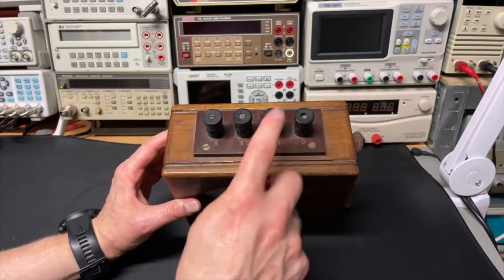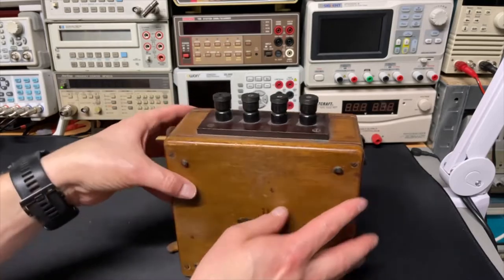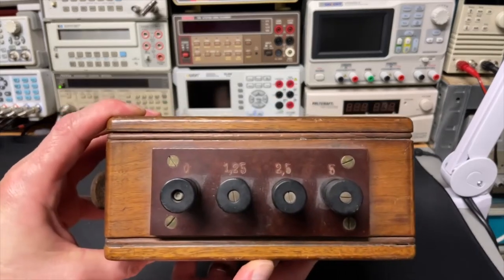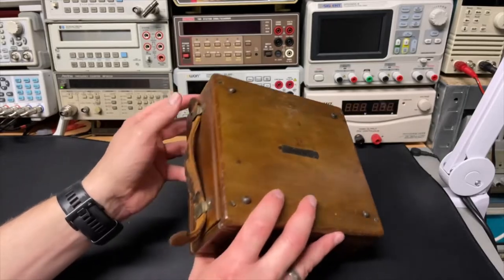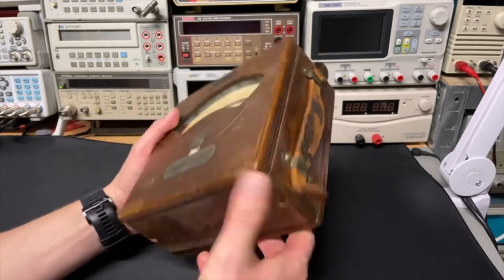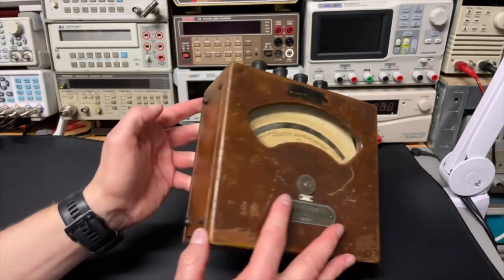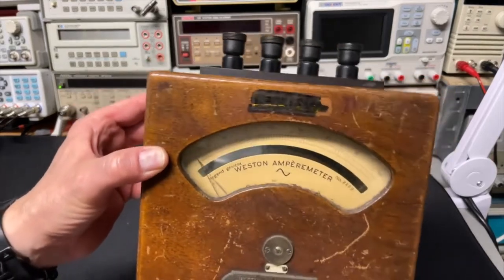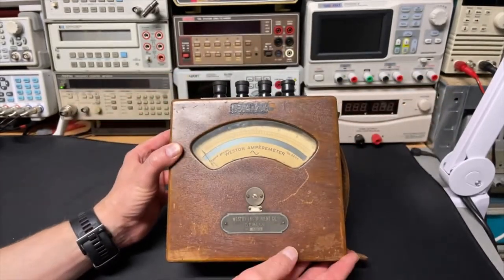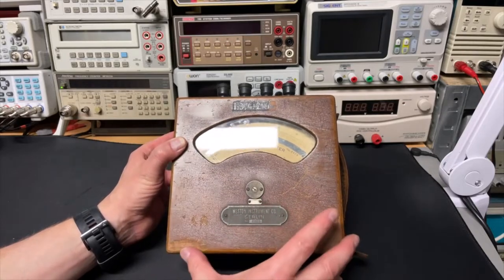It can do several ranges. I have here the zero, 1.25, 2.5 and 5 amps. As you can see it is a very nice wooden box, leather handle. Let's see if we can have a closer look. It is an AC meter. It is still moving so it could still be working so we can try that out.